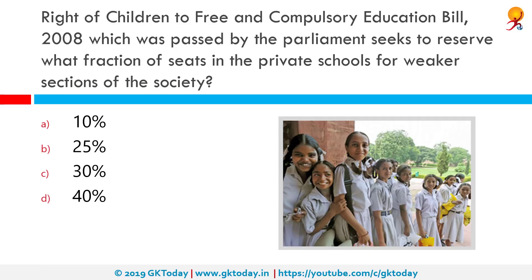which was passed in the parliament, seeks to reserve what fraction of seats in the private schools for weaker sections of society? The correct answer is 25%. The Right of Children to Free and Compulsory Education Act, or Right to Education Act, is an act of the Parliament of India enacted on 4th August 2009, which describes the modalities of free and compulsory education for children between the age of 6 to 14 years in India under Article 21A of the Indian Constitution.